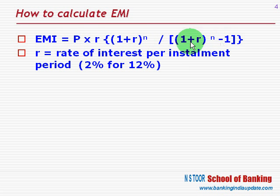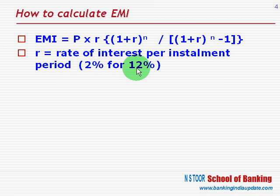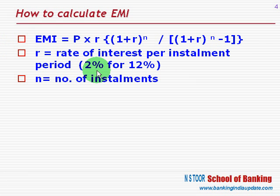In this formula, P stands for the principal amount, that is the loan amount. R is the rate of interest per installment period. Here interest is 12% and the number of installments is 6, so per installment period interest is 2%. N is the number of installments.